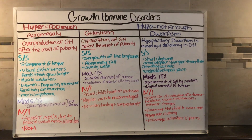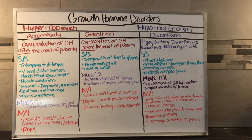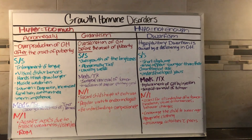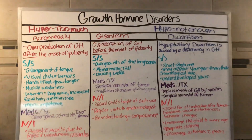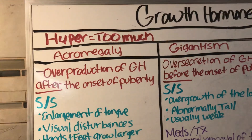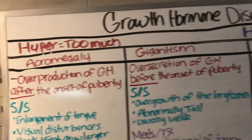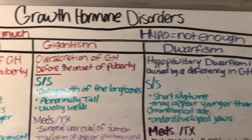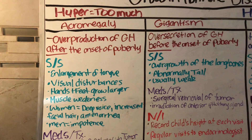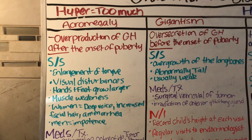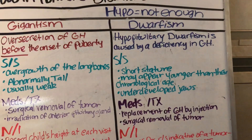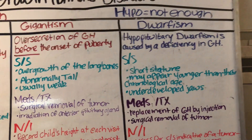In this video we're going to go over the growth hormone disorders. Growth hormone is secreted by the anterior pituitary gland. We're going to look at hyper and hypo — hyper means too much growth hormone and hypo refers to not enough. For too much growth hormone we have acromegaly and gigantism, and for hypo, which is not enough growth hormone, we're going to look at dwarfism.